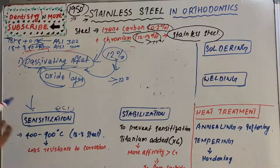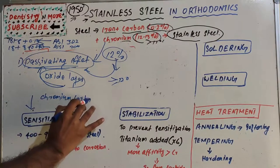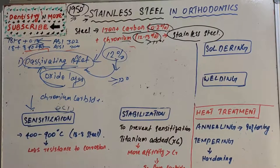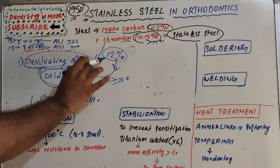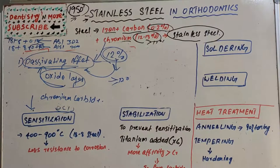When stainless steel is heated around 400 to 900 degrees Celsius, the chromium and carbon at the grain boundaries react and form chromium carbide. This leads to a loss of chromium from the matrix of stainless steel, bringing the chromium content below 12%. As a result, the passivating effect is lost, corrosion resistance is reduced, and the metal is weakened. This process is known as sensitization — the loss of corrosion resistance of stainless steel.